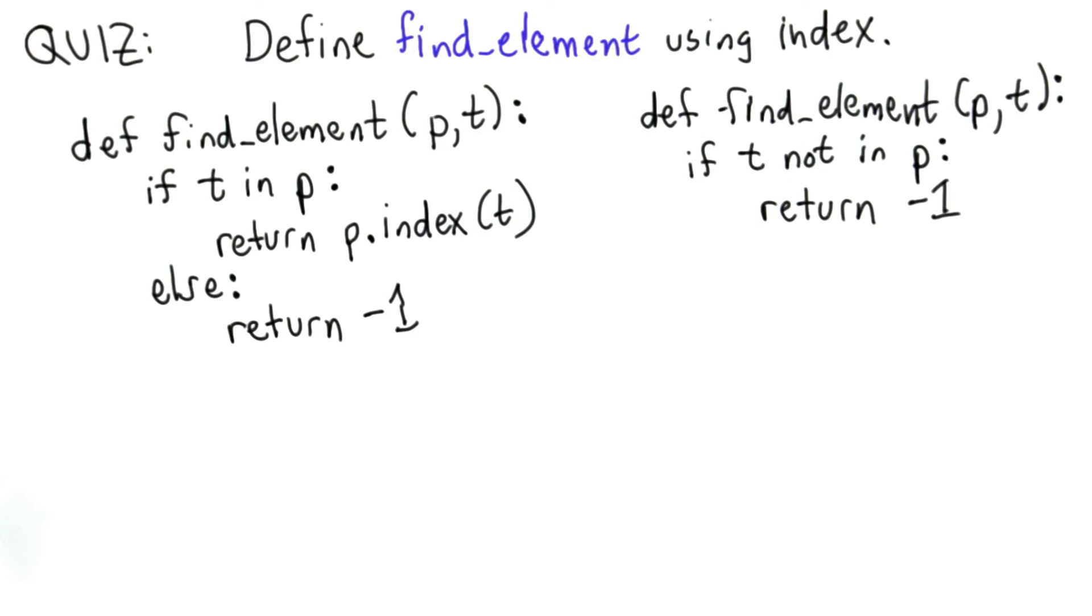If we reach the next statement, then we know that t is in p, and we can return the result of p.index passing in t.